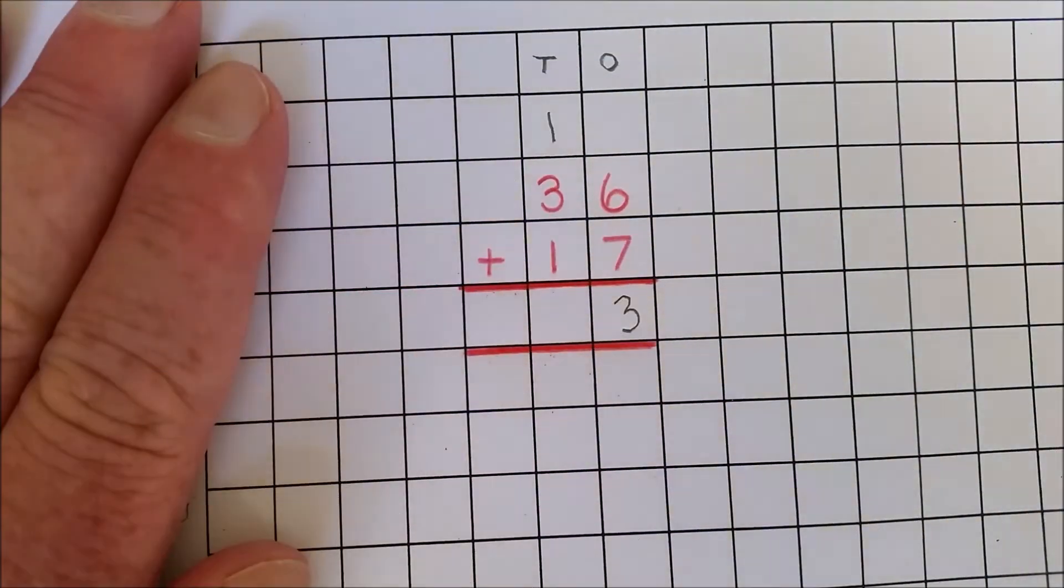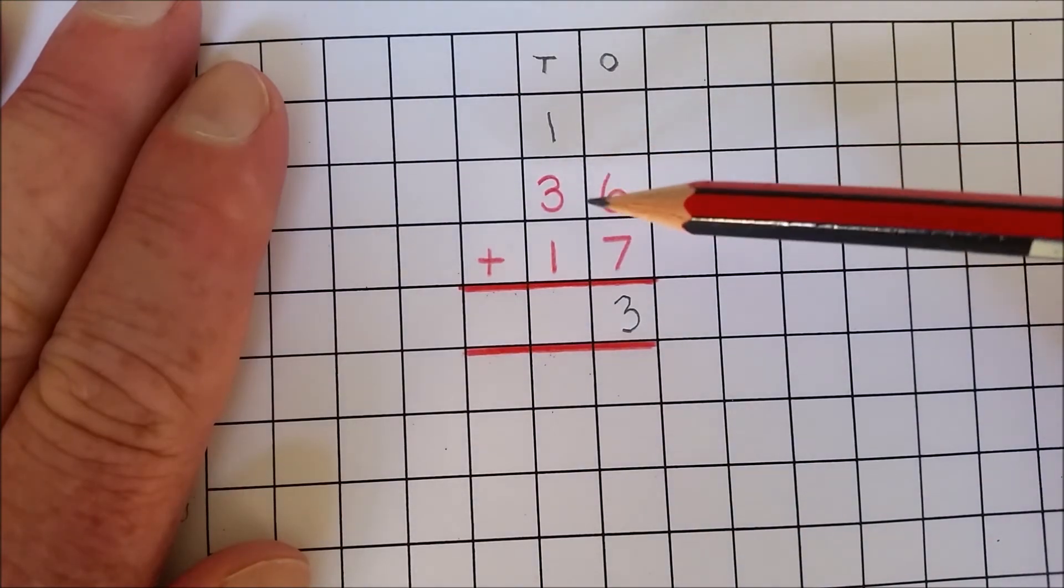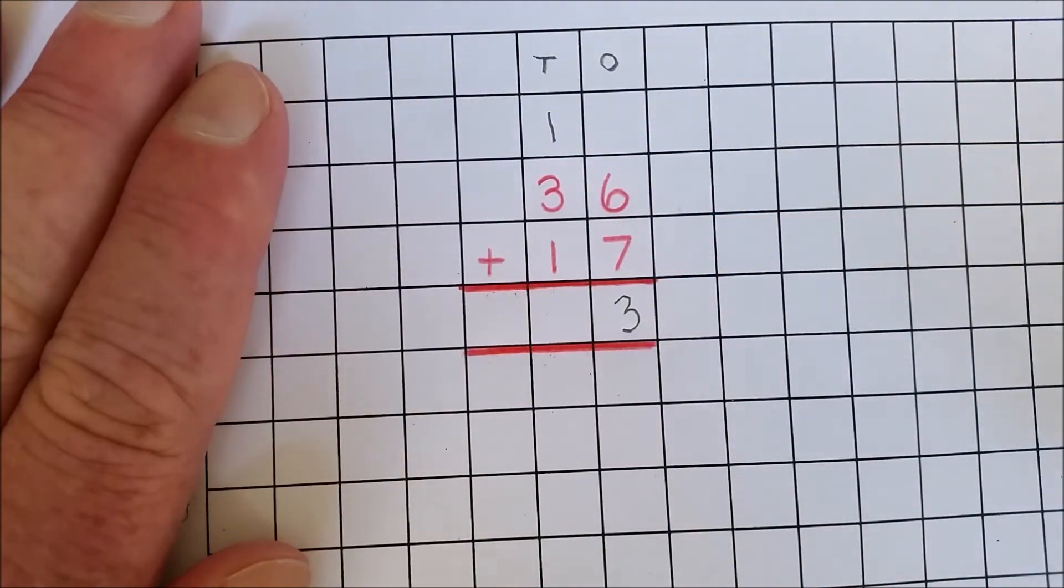Add the tens. One ten, three tens and one ten are five tens. There's no need to rename.